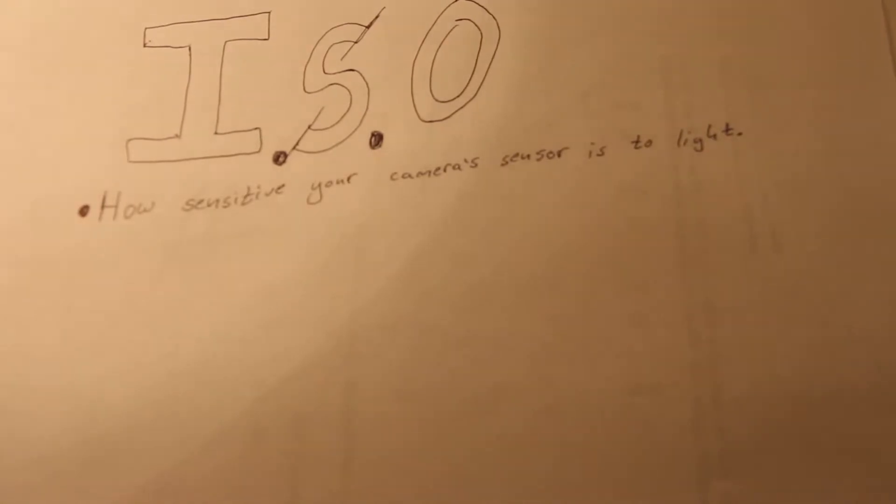Number one, ISO. ISO is how sensitive your camera sensor is to the light around it. If you have a higher ISO, you'll have a brighter image.